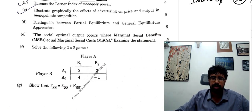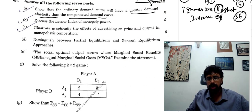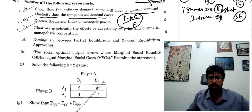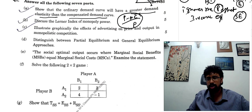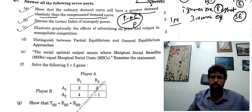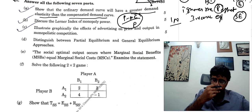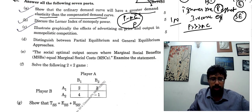Next question: what is the Lerner Index of monopoly power? So, this is P minus MC divided by P. Higher the Lerner Index, higher the monopoly power. So the greater the difference between P and MC, the more the power.